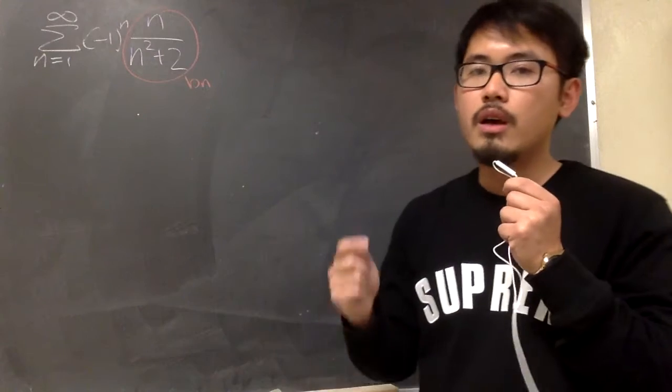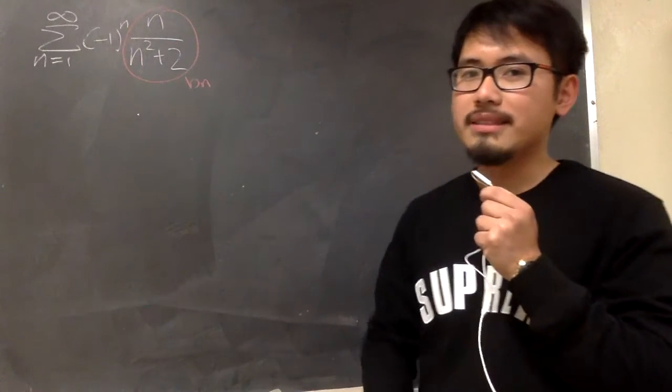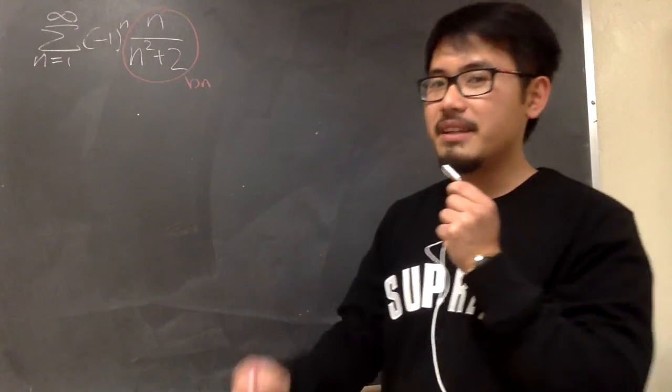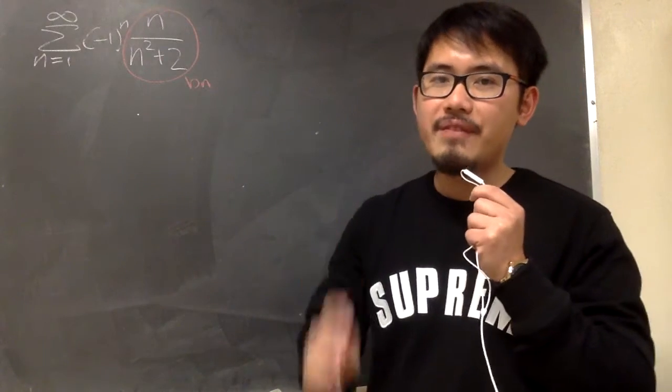And now we have two things to check. First one, can we show that this approaches 0 as n goes to infinity? Secondly, can we also show that bn is a decreasing sequence after some n value?